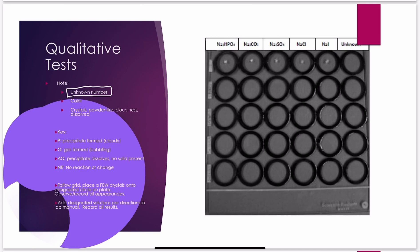Does your solid sample look like crystals or is it powder-like? Does it form a cloudy solution? Does it dissolve? On your report sheet: P stands for precipitate formed, meaning it got cloudy; G stands for gas formed, meaning there was bubbling; AQ means a precipitate dissolves and no solid is present; and NR means no reaction — nothing happened, it looks the exact same as when you started.